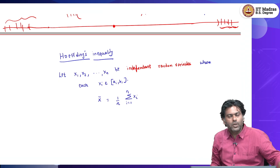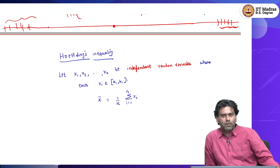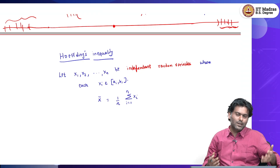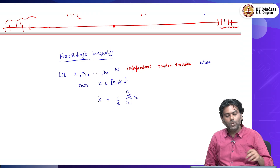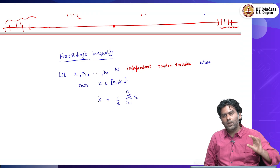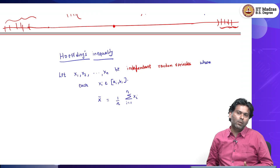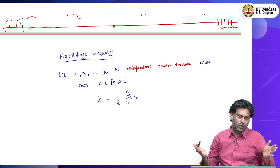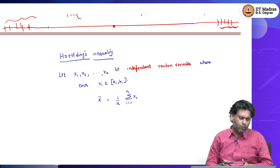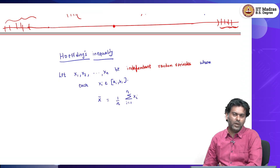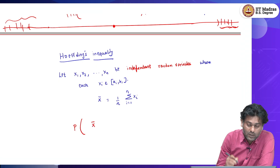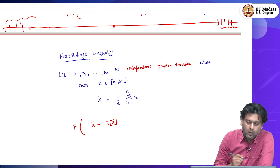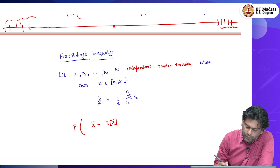For example, you might toss a coin — heads means the value is 1, tails means the value is 0. Each coin toss is independent. If they are also identically distributed — the same coin tossed every time — Hoeffding does not need the identically distributed assumption, but let's say we toss the same coin n different times. Each xi takes value 0 with probability half and 1 with probability half. Now we might ask how far this average is deviating from the expected value of the average.